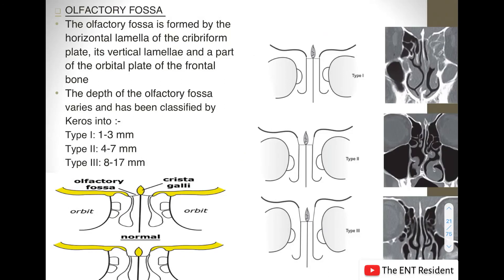Above the cribriform plate lies the olfactory fossa, which is formed by the horizontal lamella of the cribriform plate, its vertical lamella, and a part of the orbital plate of the frontal bone. As you can see in this picture, this region is the cribriform plate, with the horizontal and vertical lamellae helping form the olfactory fossa, along with the orbital plate of the frontal bone.